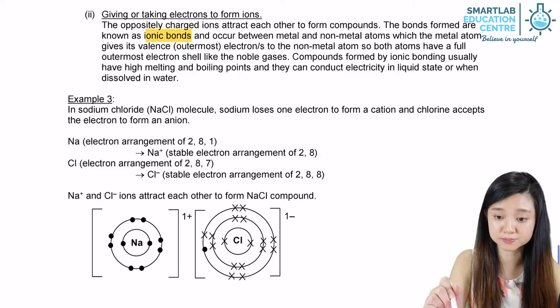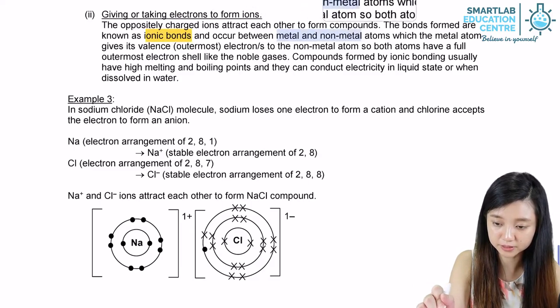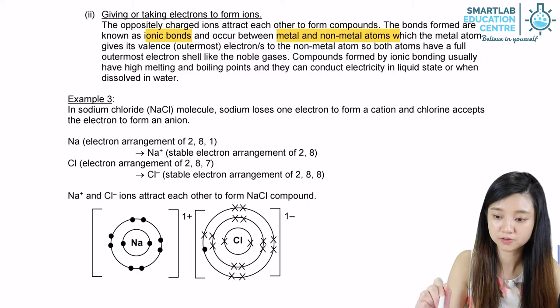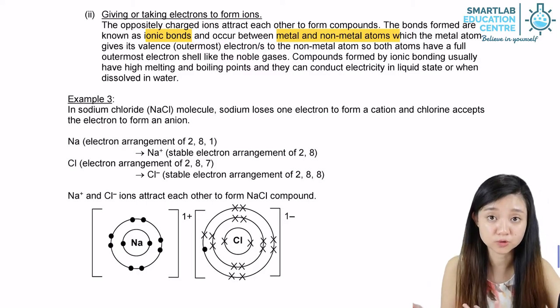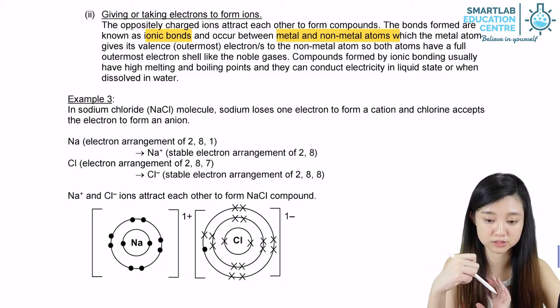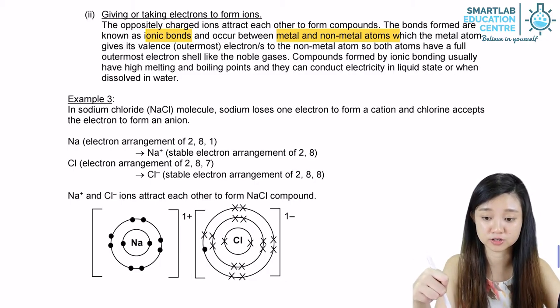This usually occurs between metals and non-metal atoms, where the metal atoms give away the outermost electron while the non-metal gains the electron to attain the stable electronic configuration.